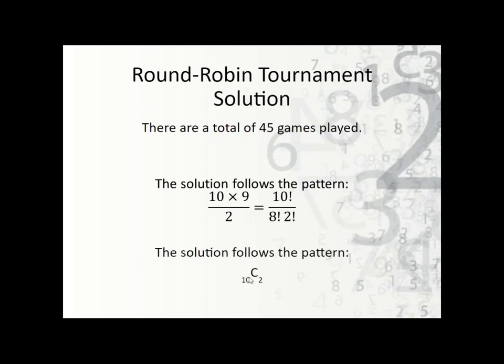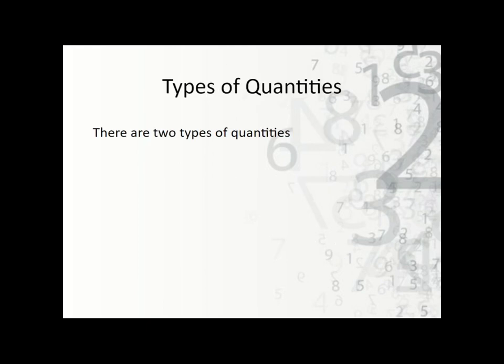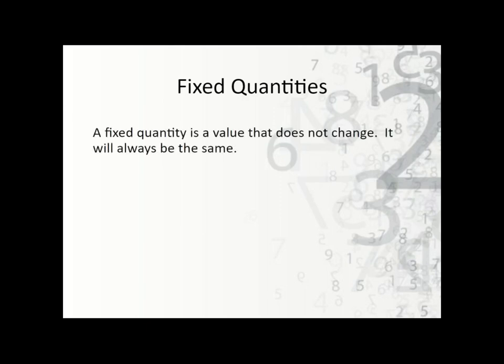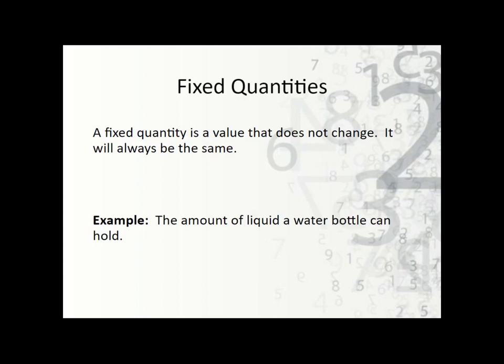Now let's talk about the types of quantities. There are two types: fixed quantities and varying quantities. Fixed quantities do not change — they will always be the same. An example would be the amount of liquid a water bottle can hold. If it's a 16-ounce bottle, it's only going to hold 16 ounces — it can't hold any more than that. That's a fixed quantity.